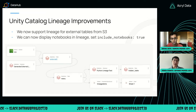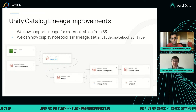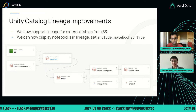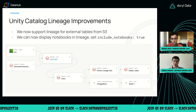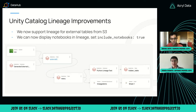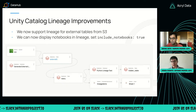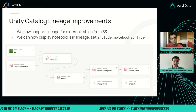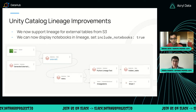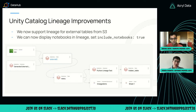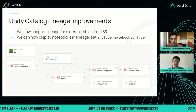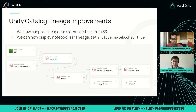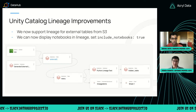We can get lineage for external tables from S3, and we display notebooks in lineage if you set include_notebooks to true. For example, you can get a chain of lineage where you first pull a Unity Catalog table from S3 and then eventually use it in a Tableau dashboard or chart. This is just an example of what it might look like.